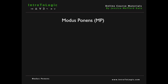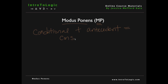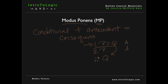Our second rule of inference will be modus ponens. We can abbreviate this rule with the letters MP. According to modus ponens, if we have a conditional and the antecedent of that conditional, then we can deduce the consequent. So for example, if I have the conditional 'if P then Q' as my first premise and P as my second premise, I can then conclude the consequent of the first premise, Q. This is because modus ponens says if we have a conditional — here 'if P then Q' in premise one — and you have the antecedent of the conditional, which is P, we can then deduce the consequent Q.